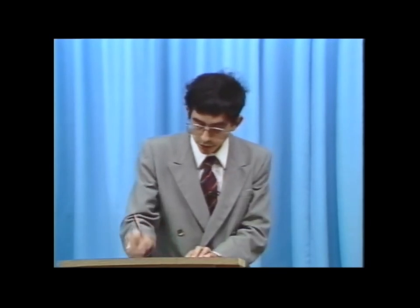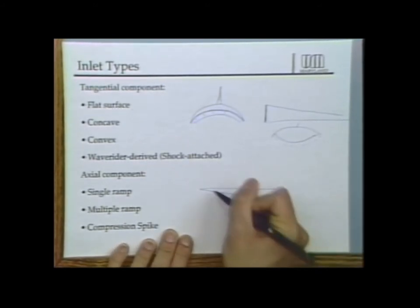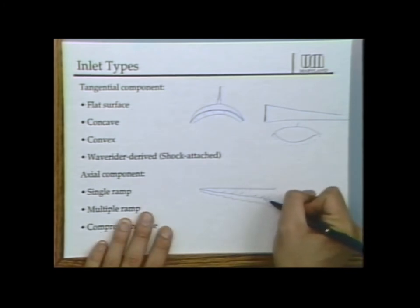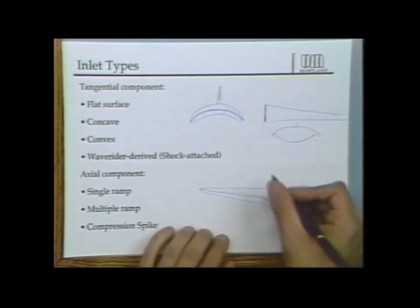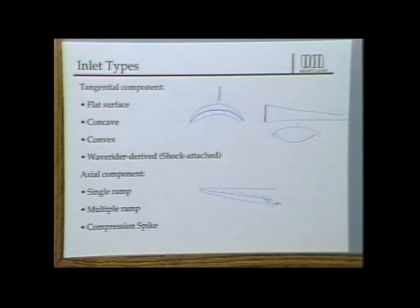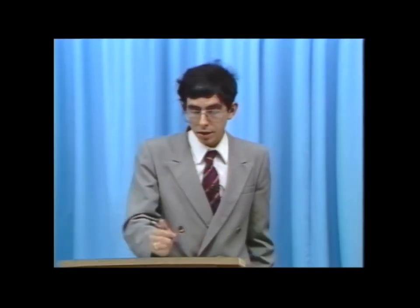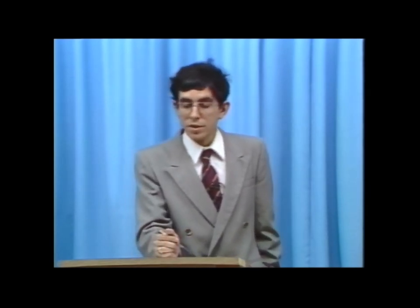In the axial direction, we can have single-ramp or multiple-ramp inlet designs. A single ramp forms one shock providing all the compression. Multiple ramps add extra ramps to increase compression, reduce overall inlet size, and reduce viscous losses, though they increase the required turning to straighten flow inside the engine. In general, more ramps mean a more efficient inlet. The limit is a compression spike approximating isentropic compression — and future hypersonic vehicles may incorporate some aspect of compression spikes.